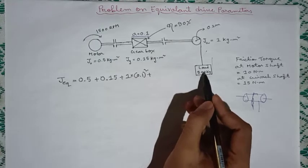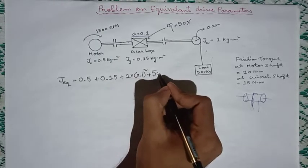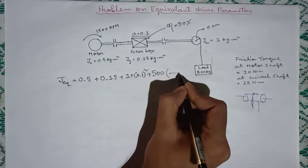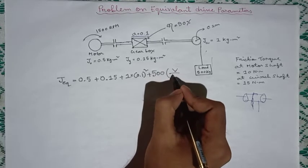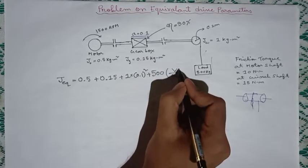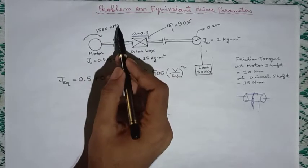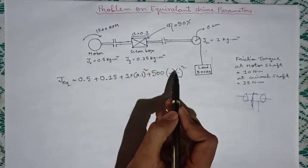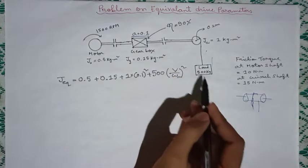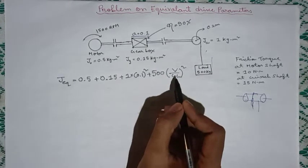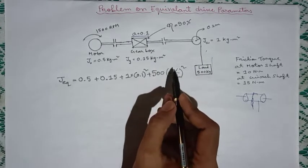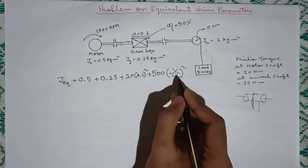Now for this load, we have to write the expression for linear motion. So its mass is 500, so m into v by omega m square. Now omega m is known, this is given as 1500 rpm, but we do not know the value of v, the linear velocity of the load. If you are not familiar with this expression, please go through my previous video.